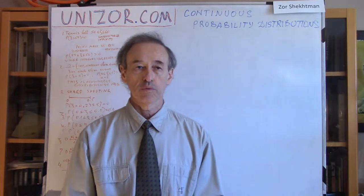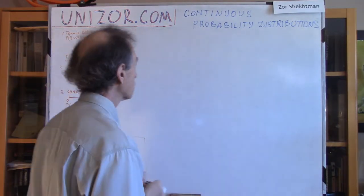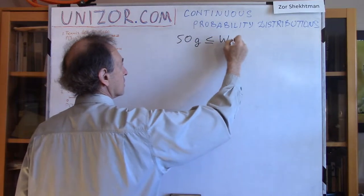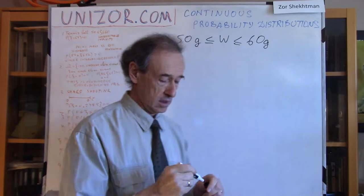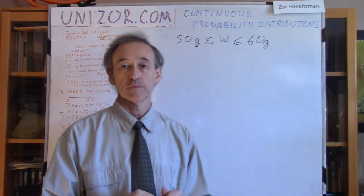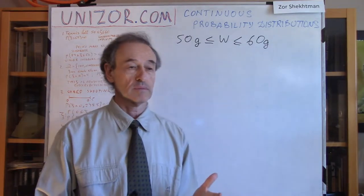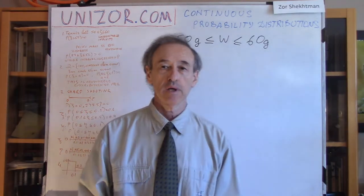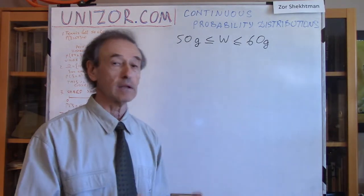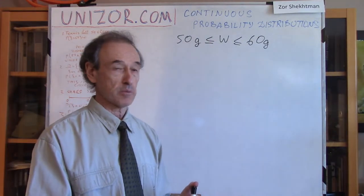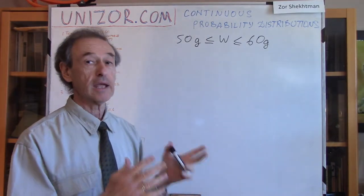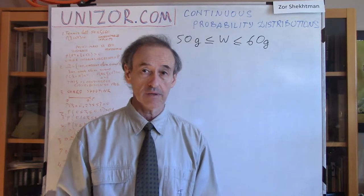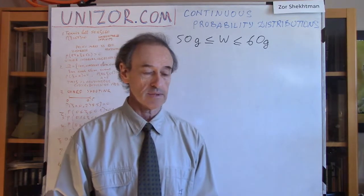Now let's talk about a different example which leads us to continuous distribution. For instance, we are dealing with manufacturing tennis balls. The manufacturing process is such that the weight is always in the range from 50 to 60 grams. However, the precise weight can be any number in between. If we are talking about the mathematical model of this process, we should allow any real number from 50 to 60 as an outcome — and there are an uncountable number of those, a continuum as they call it in set theory.